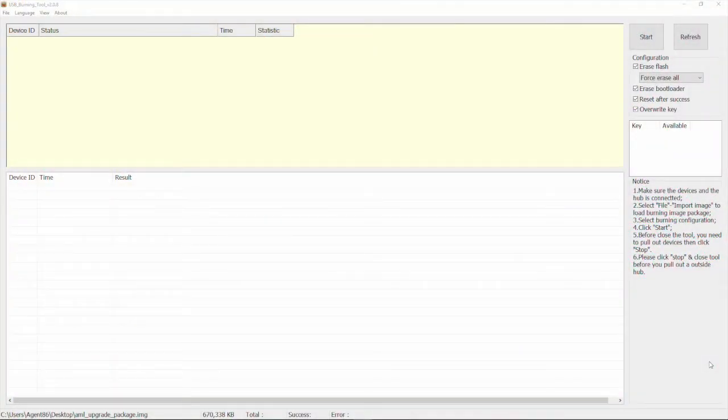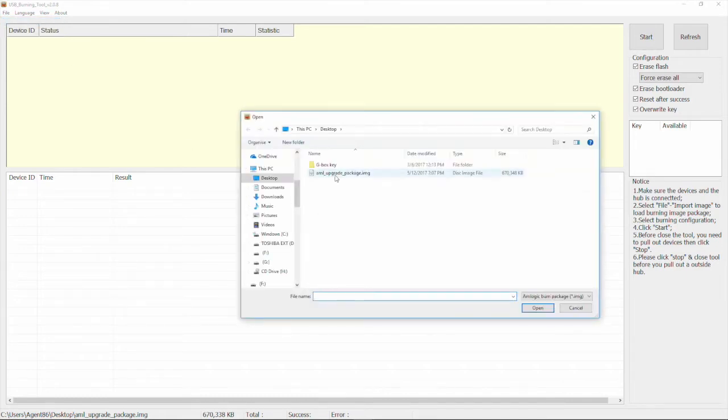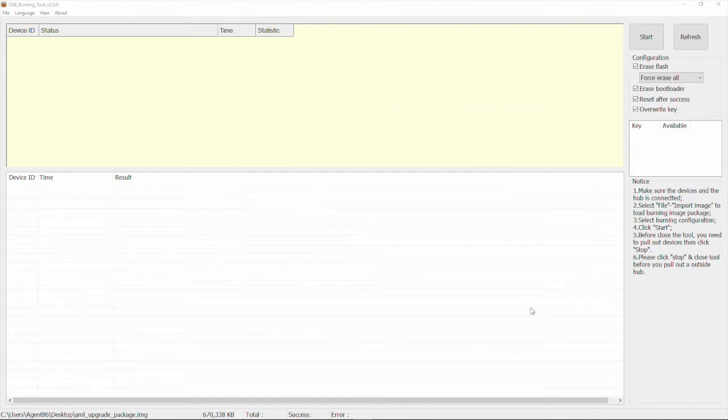Now back to our computer, we have the USB burning tool open. A quick reminder: the first thing you have to do is click File, then Import Image. From there you're going to find the AML upgrade package that you downloaded and we're going to click Open. Over here to the right, make sure that you force erase all and that you've checked everything: reset after success and override key. Once you've done that, you can go ahead and do the toothpick reset until you see it pop up here in your device ID.